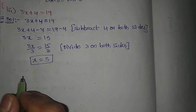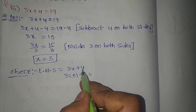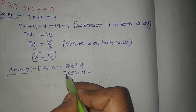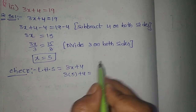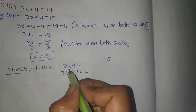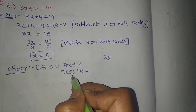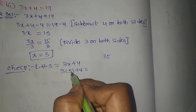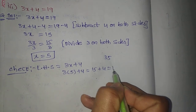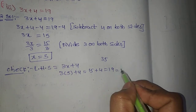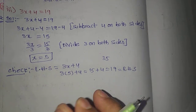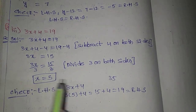Check: 3x plus 4 is the LHS. Substitute x value: 3 into 5 plus 4 equals 15 plus 4 equals 19. RHS is 19. So LHS equals RHS. x value 5 is the correct one.